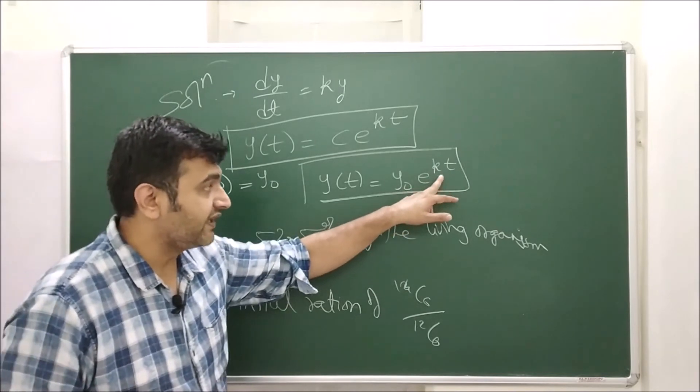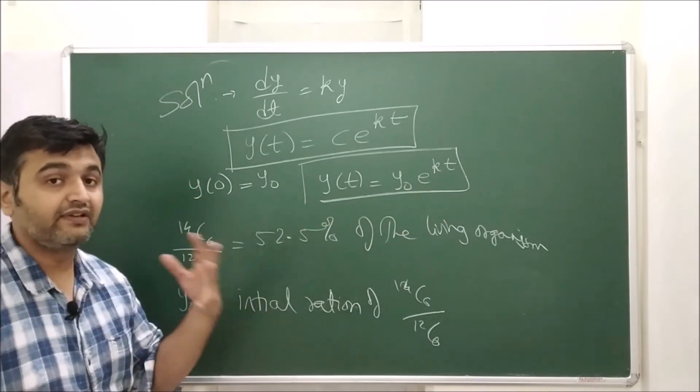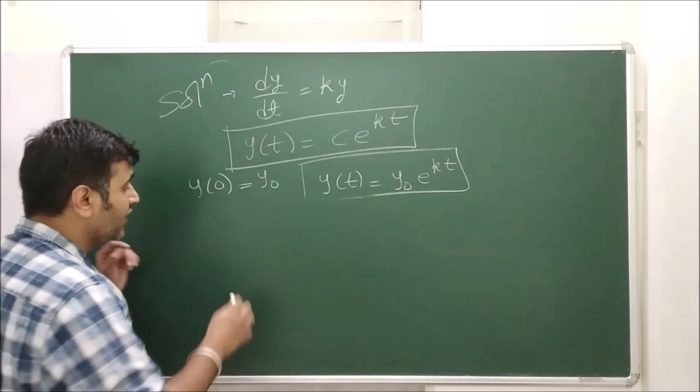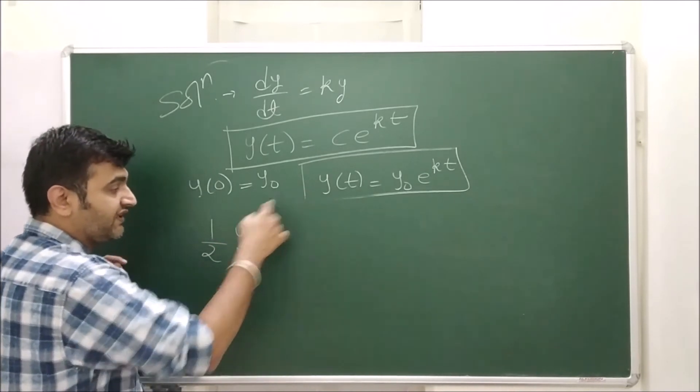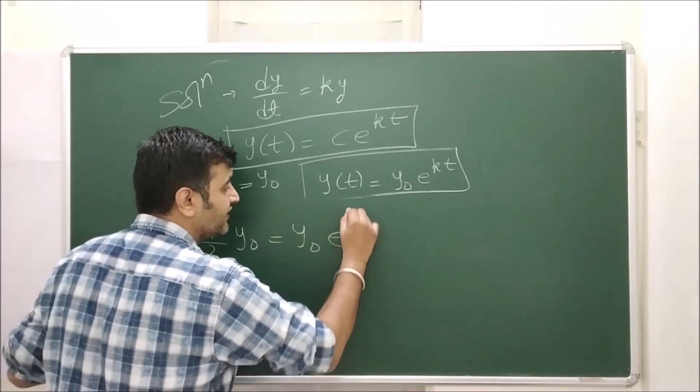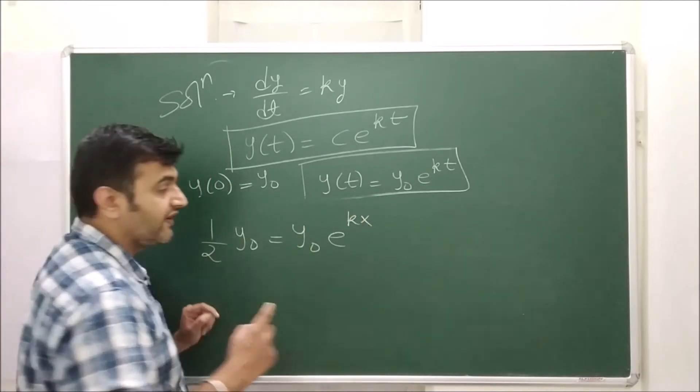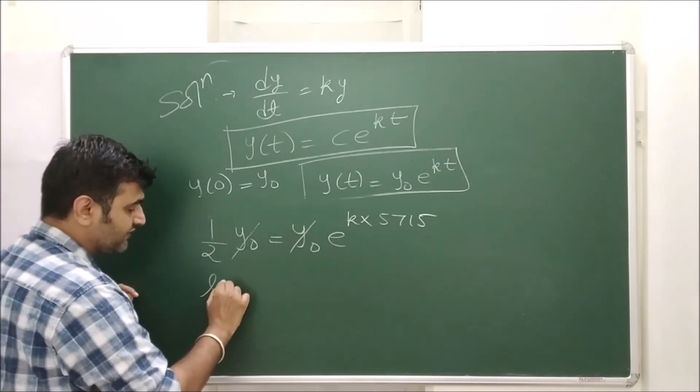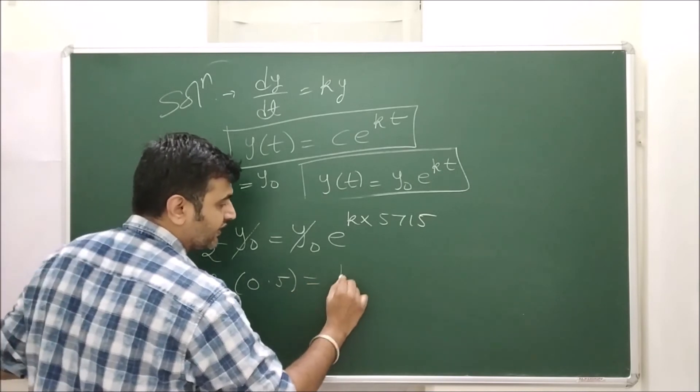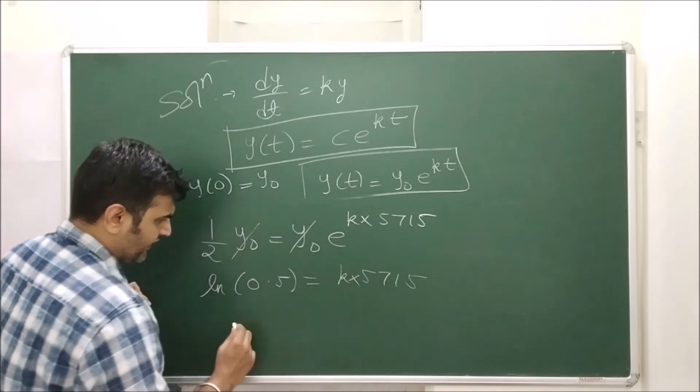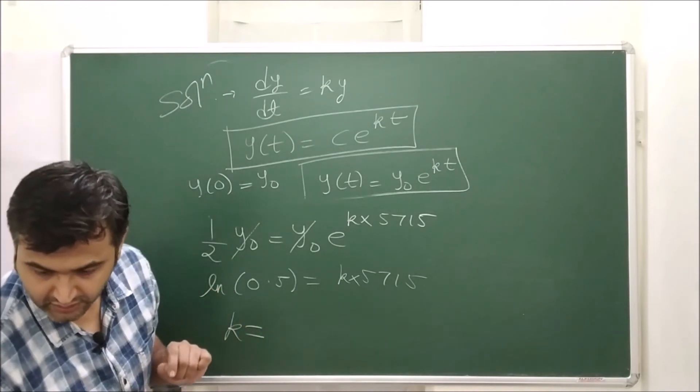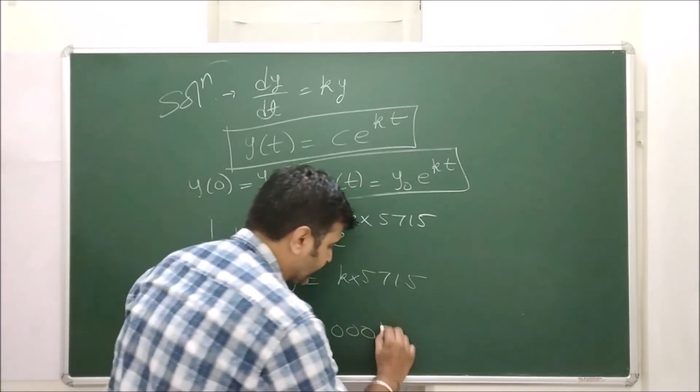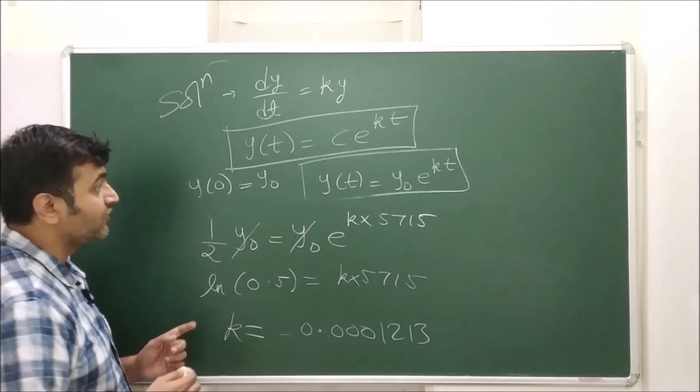Now first we will find the value of k, then we are going to use this condition to find the value of t. We'll use the half-life period. When y(t) is half of y0, this is y0 e^(k × 5715). When you cancel, I take ln on both sides. ln(0.5) = k × 5715. I have done the calculation, k comes out to be -0.0001213.